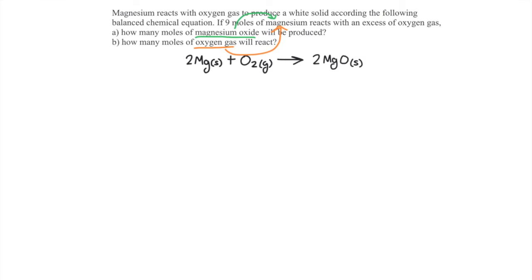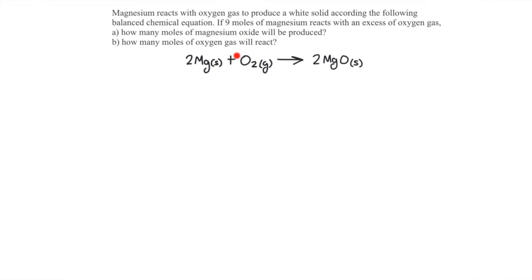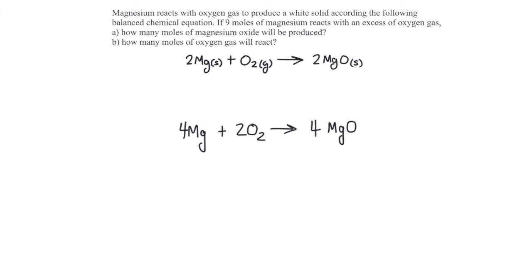In the first part of this problem, we want to compare the amount of magnesium oxide that will be produced to the amount of magnesium that reacts. In the second part of the problem, we'll compare the amount of oxygen gas required to the amount of magnesium that reacts. I can read the balanced chemical equation just like a recipe. It says that if I mix 2 moles of magnesium with 1 mole of oxygen, I'll get 2 moles of magnesium oxide. The amounts are given by the coefficients — the numbers in front of the symbols. For example, if I wanted to make 4 moles of magnesium oxide, I would need 4 moles of magnesium and 2 moles of oxygen gas.